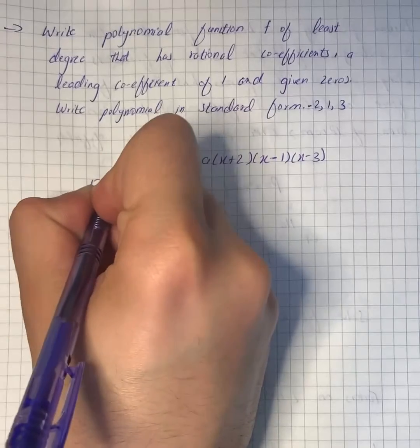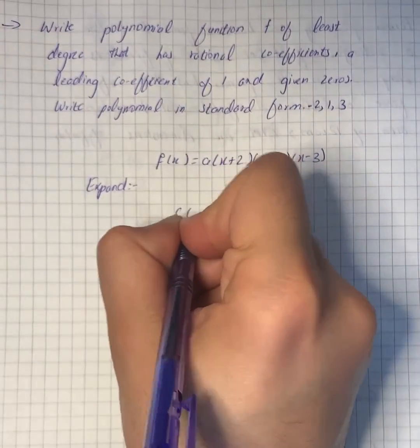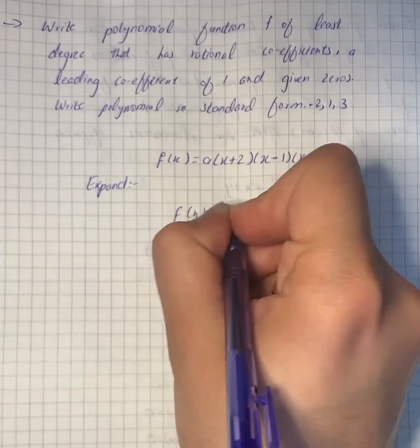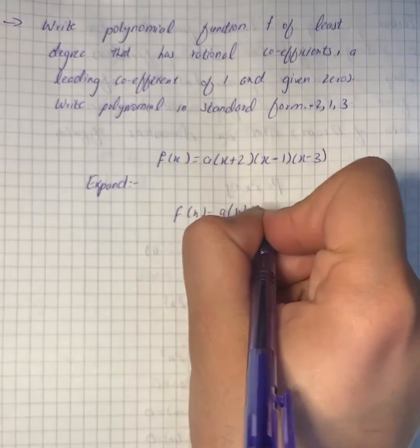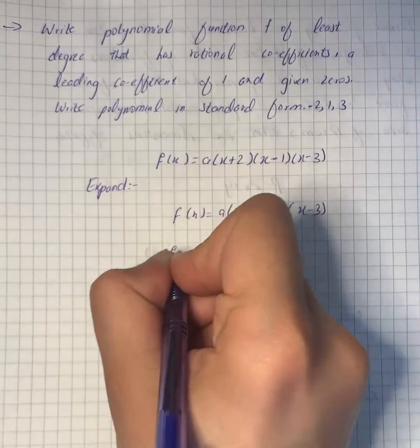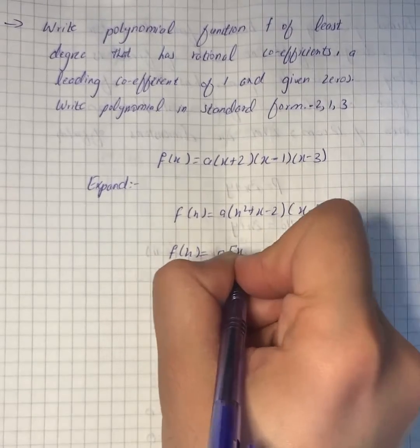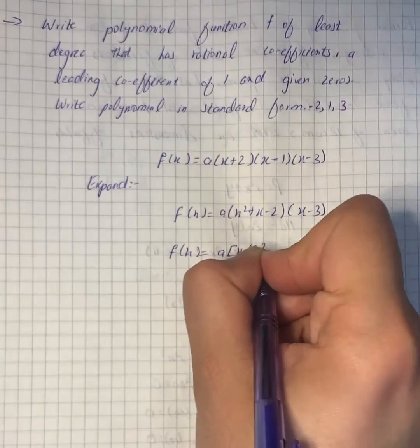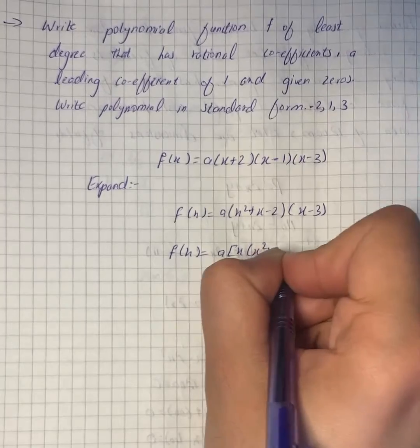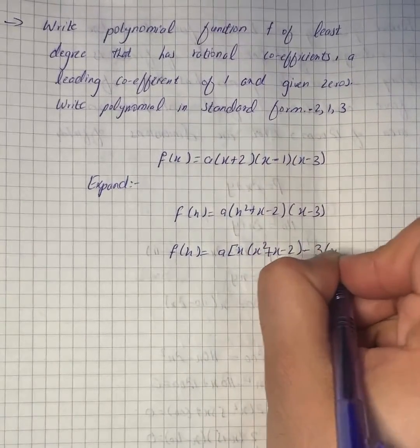It will give us f(x) equals a into x square plus x minus 2 into x minus 3. On further expansion, it gives a into x into x square plus x minus 2 into x square plus x minus 2.